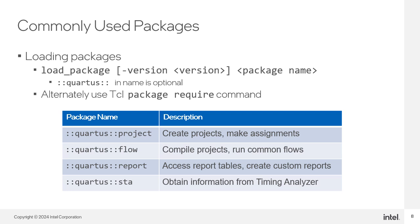Use commands in the project package to create projects and make assignments and settings. Use commands in the flow package to compile projects and run other common flows. Run commands in the report packages to create reports and extract information from the reports. Use the STA package to create timing information and run various timing reports in the Timing Analyzer. If you need to, you can use the Intel Quartus Prime software-specific load_package command to easily load packages.